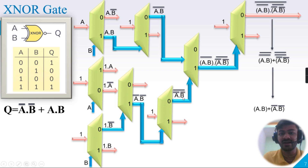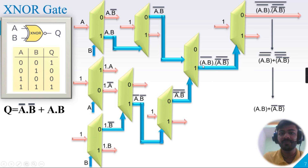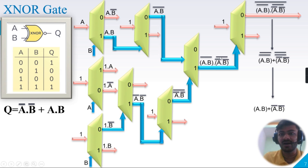The seventh demux has (A-bar AND B-bar)-bar as the select line and (A AND B)-bar as the input. The Q1 output equals (A AND B)-bar AND (A-bar AND B-bar)-bar.